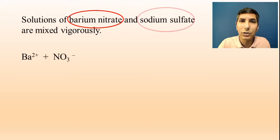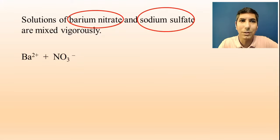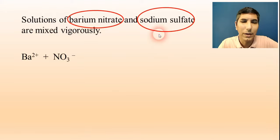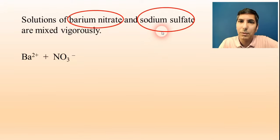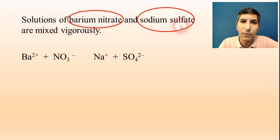Next we have sodium sulfate. That's also soluble, and we know that because it says that there's a solution of that as well. So is it soluble? Yes. So we have to write these in its ion form. That would be sodium Na+ and sulfate is SO₄²⁻.